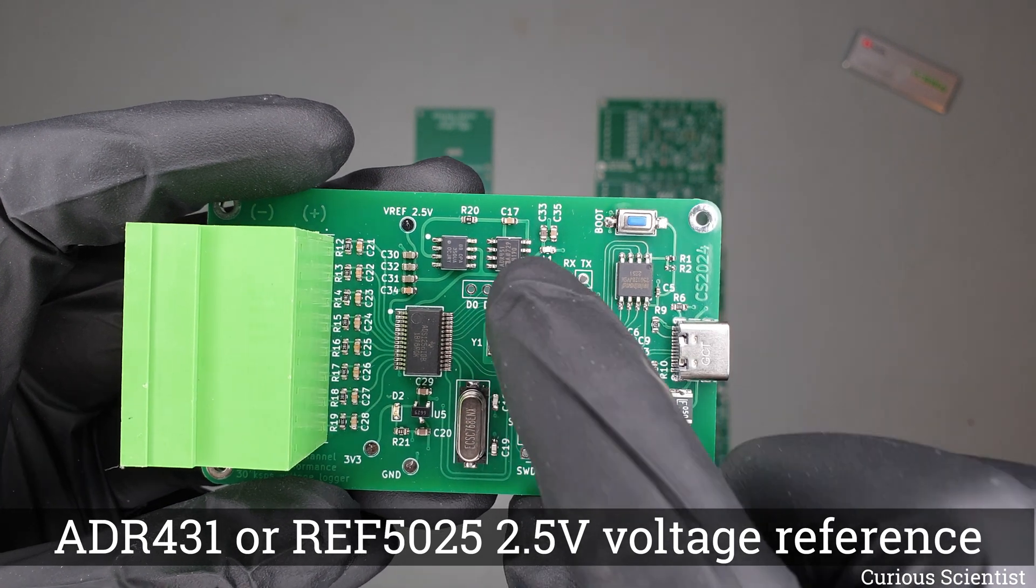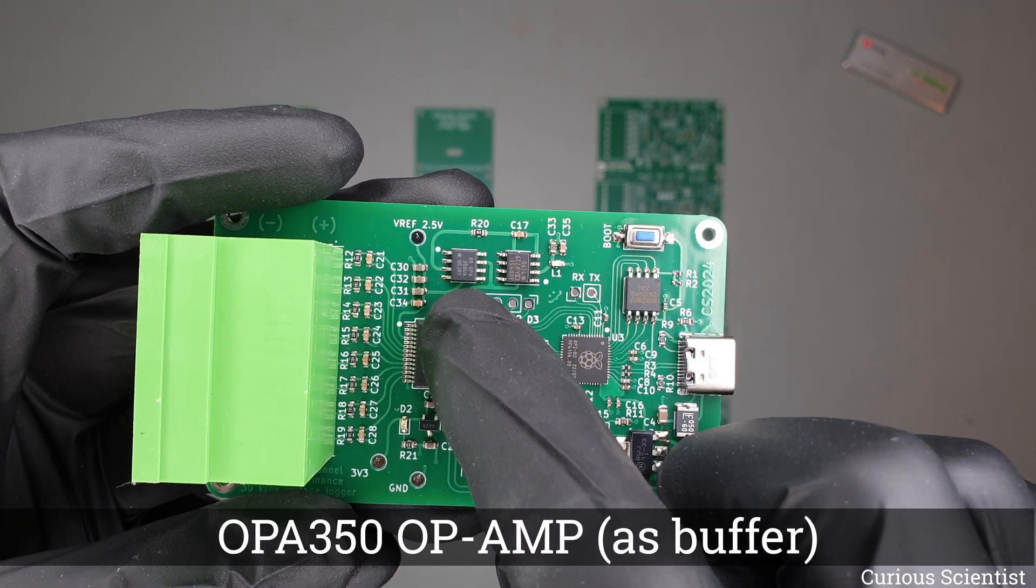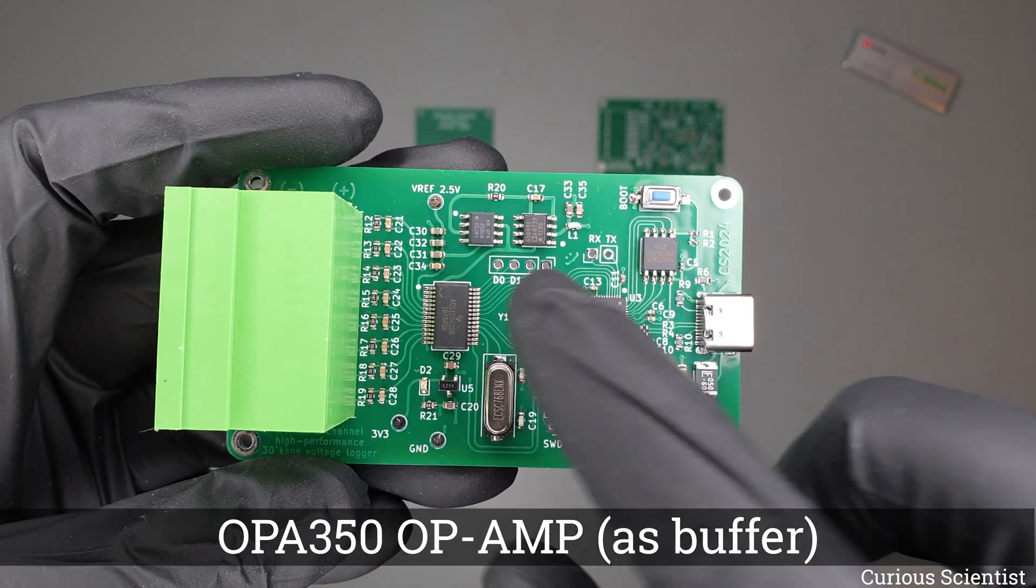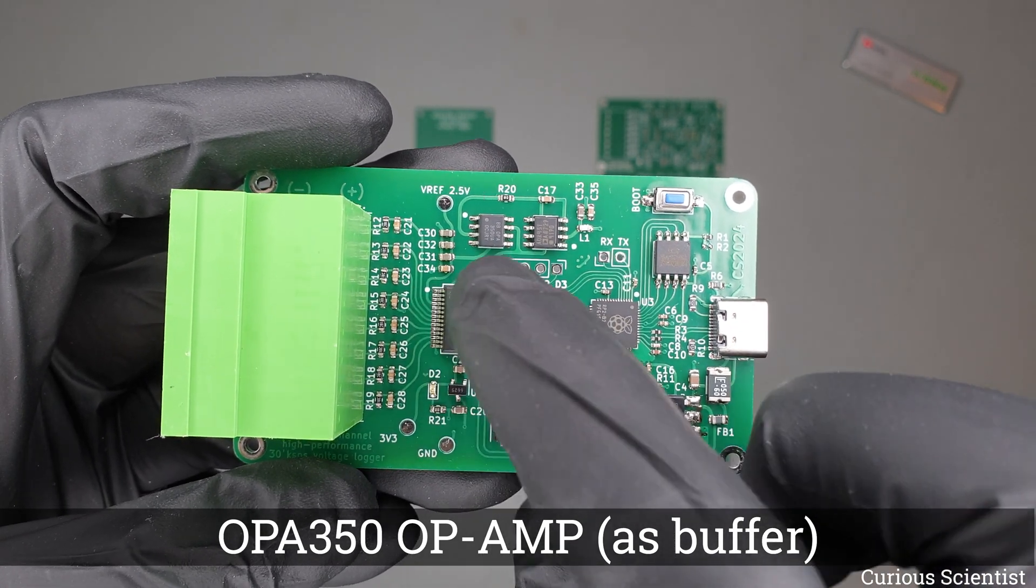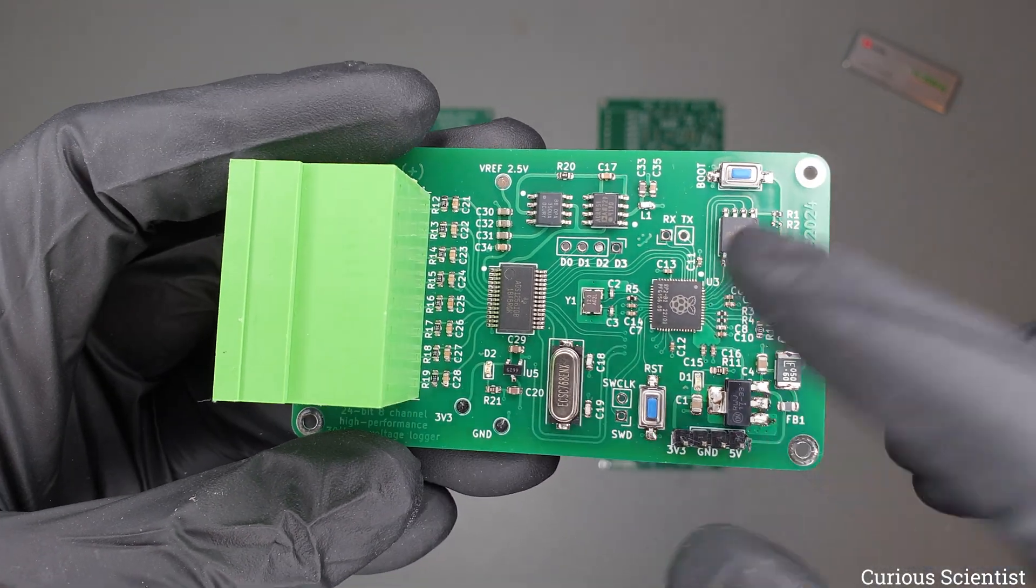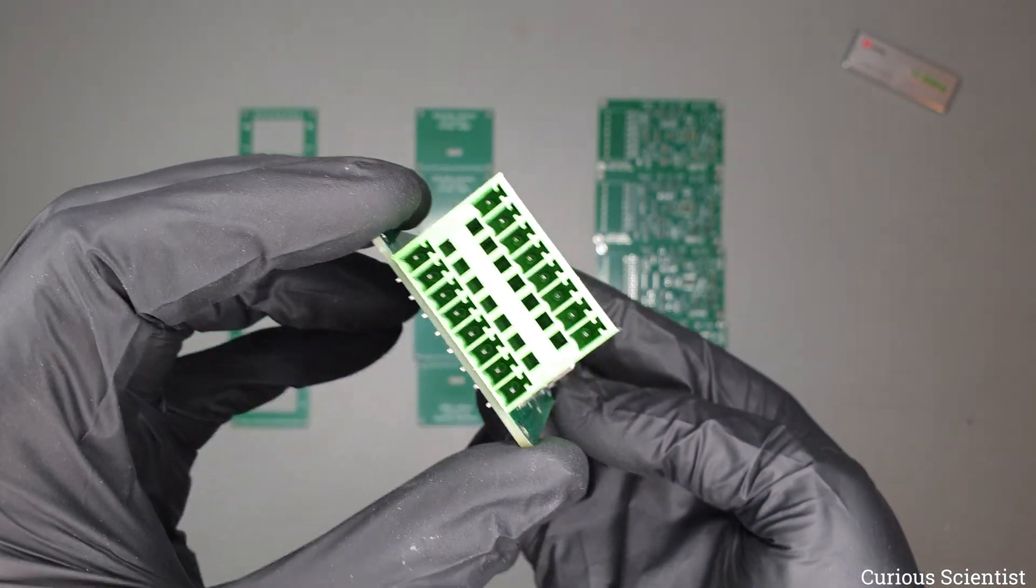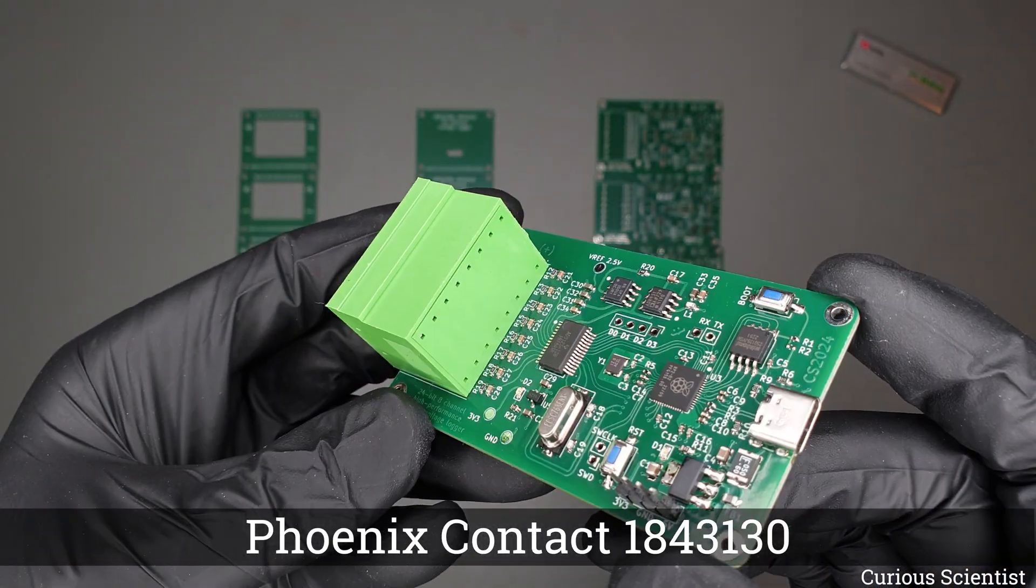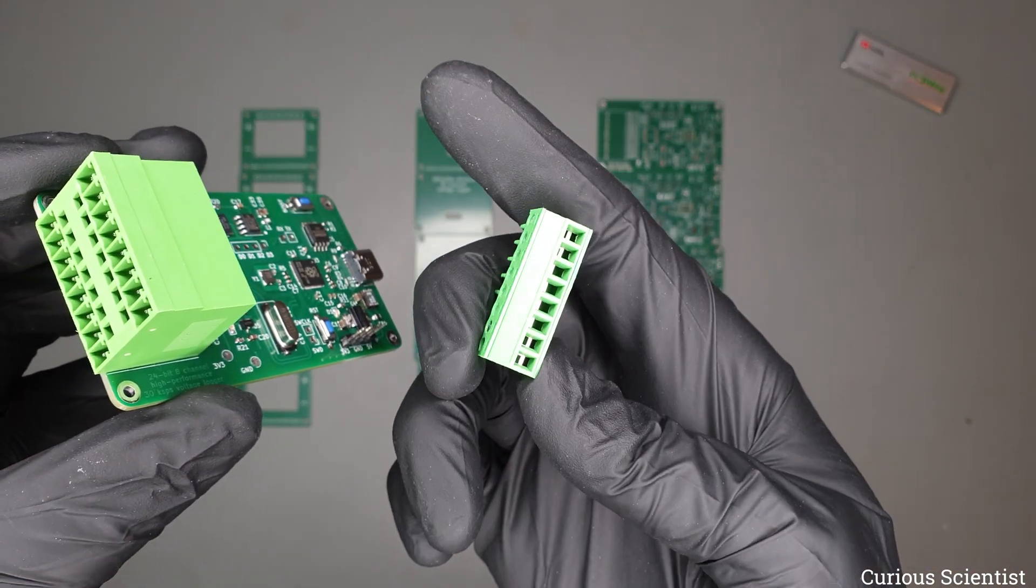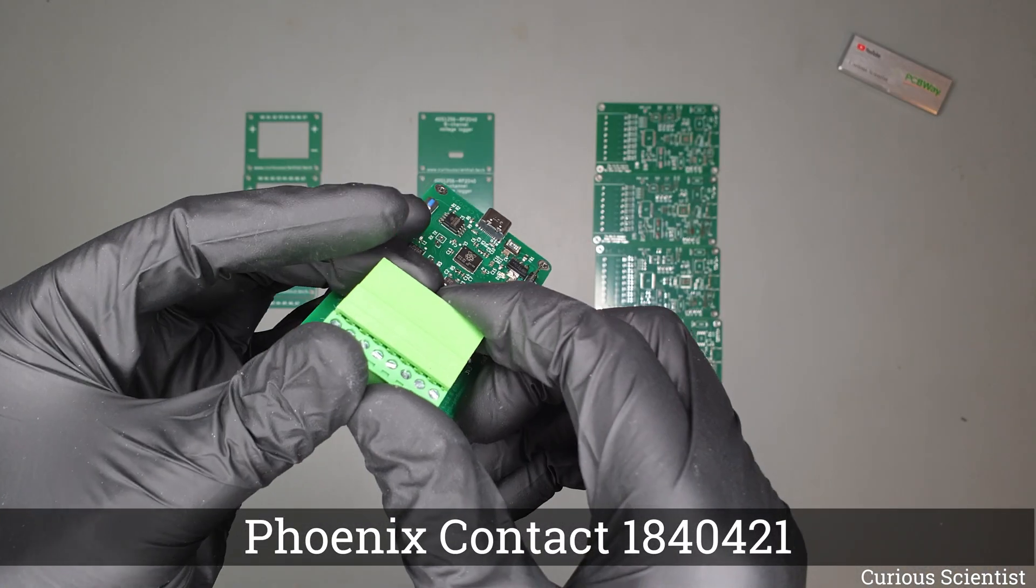Here we have a voltage reference chip and an op-amp which is just a voltage follower in this configuration. Through the voltage follower we feed the reference voltage to the AD converter, and then I have this big connector here which I really like because it comes with these screw terminals so it's really easy to use.